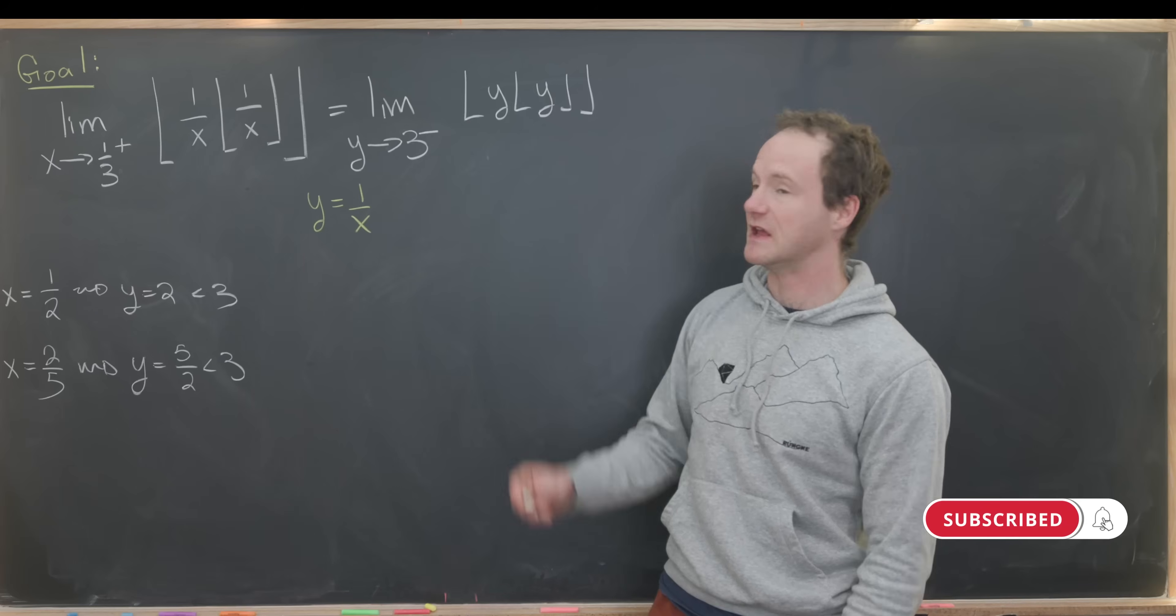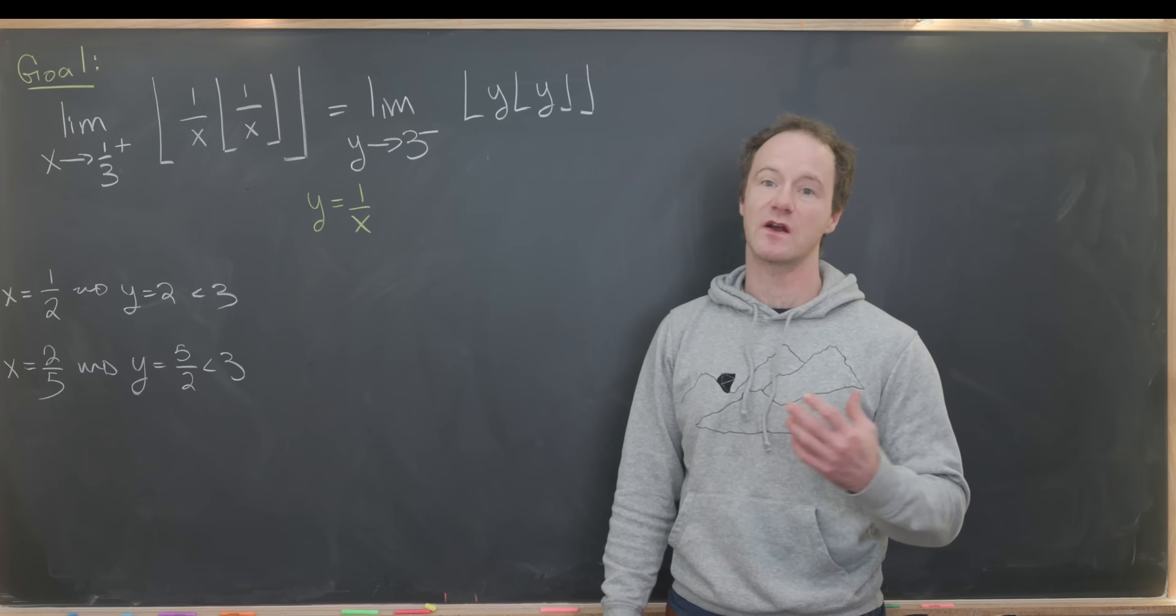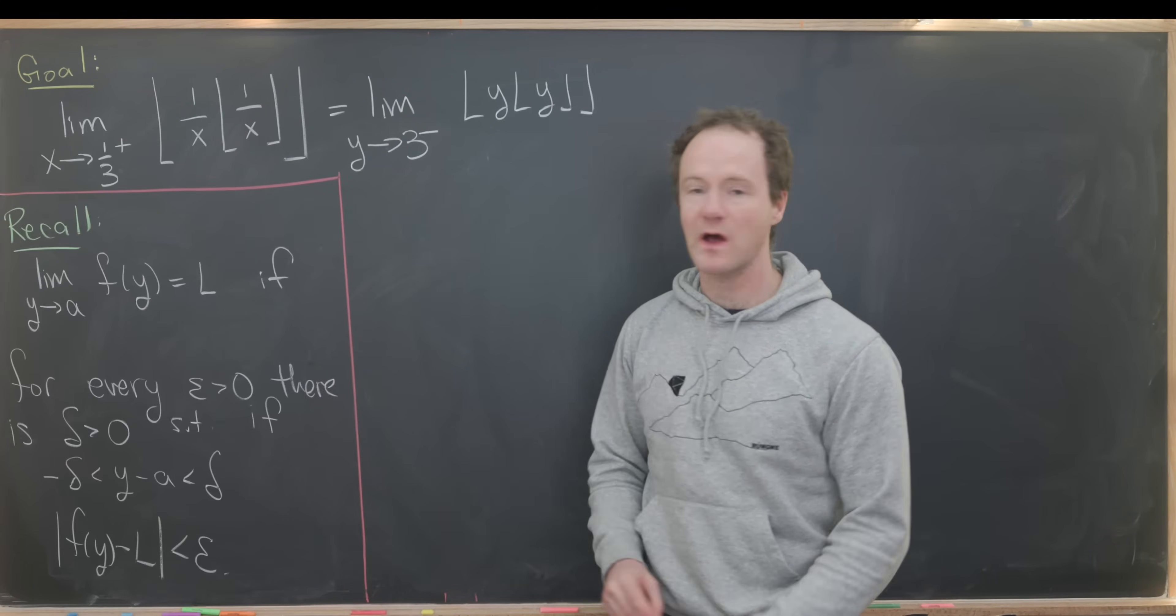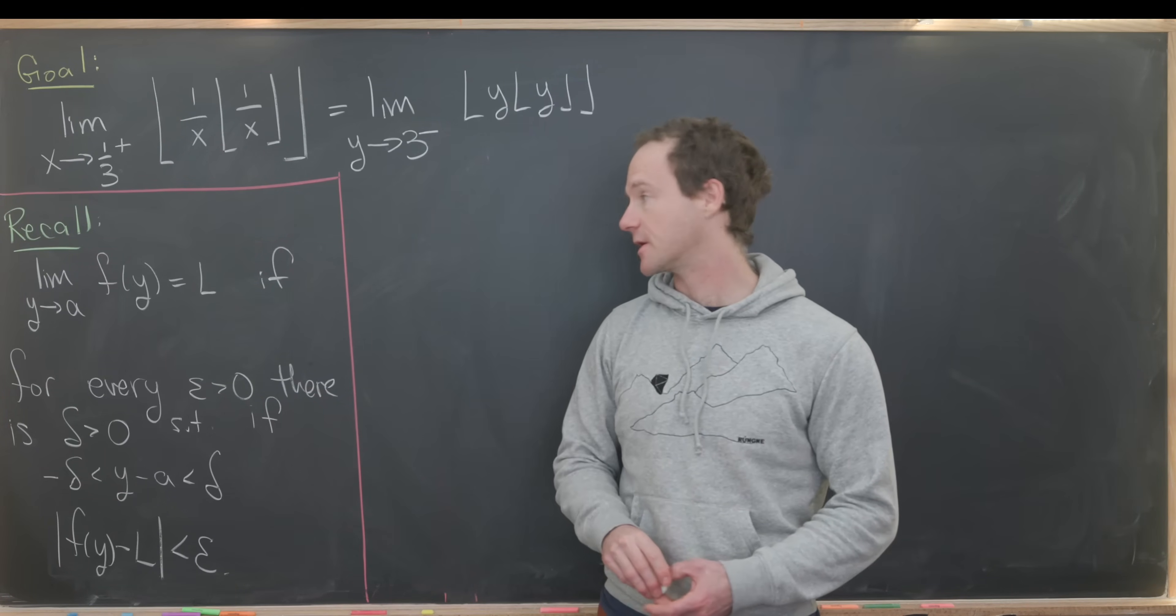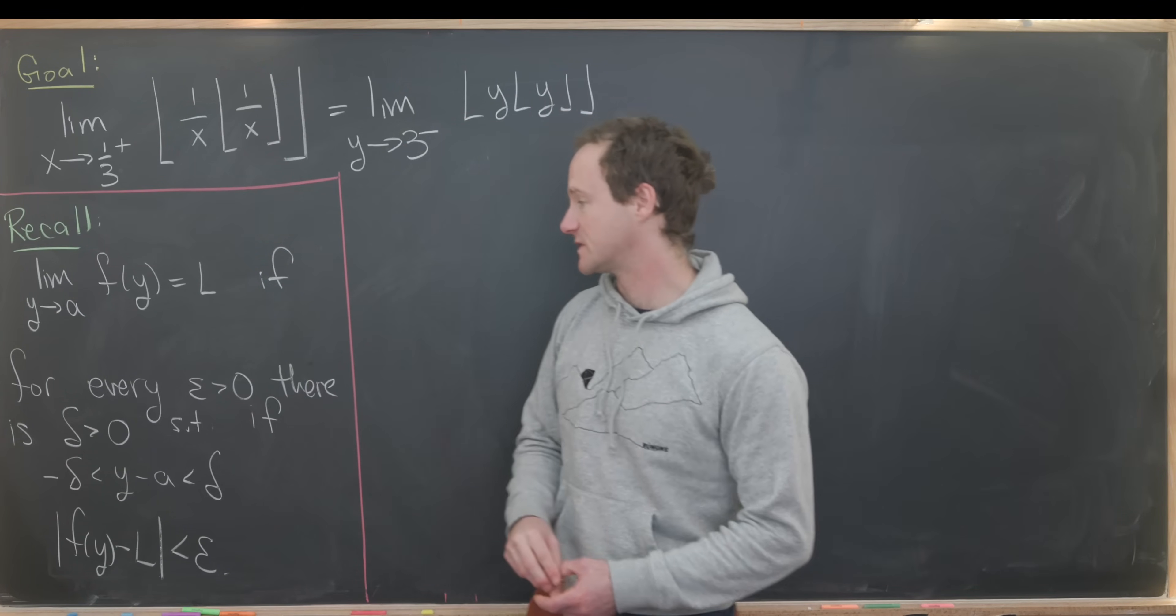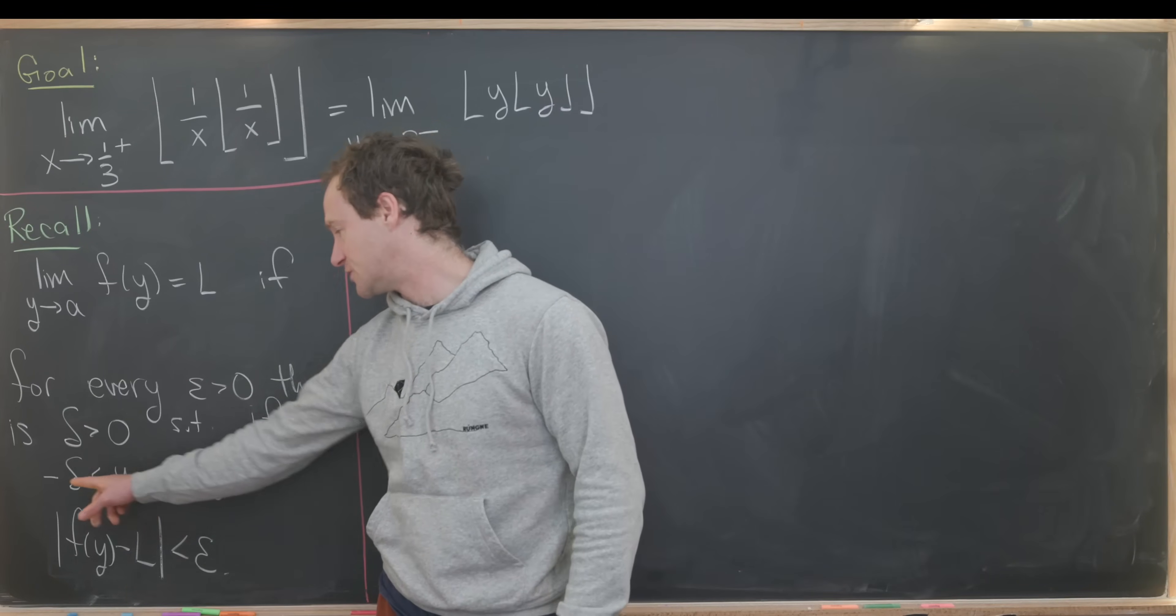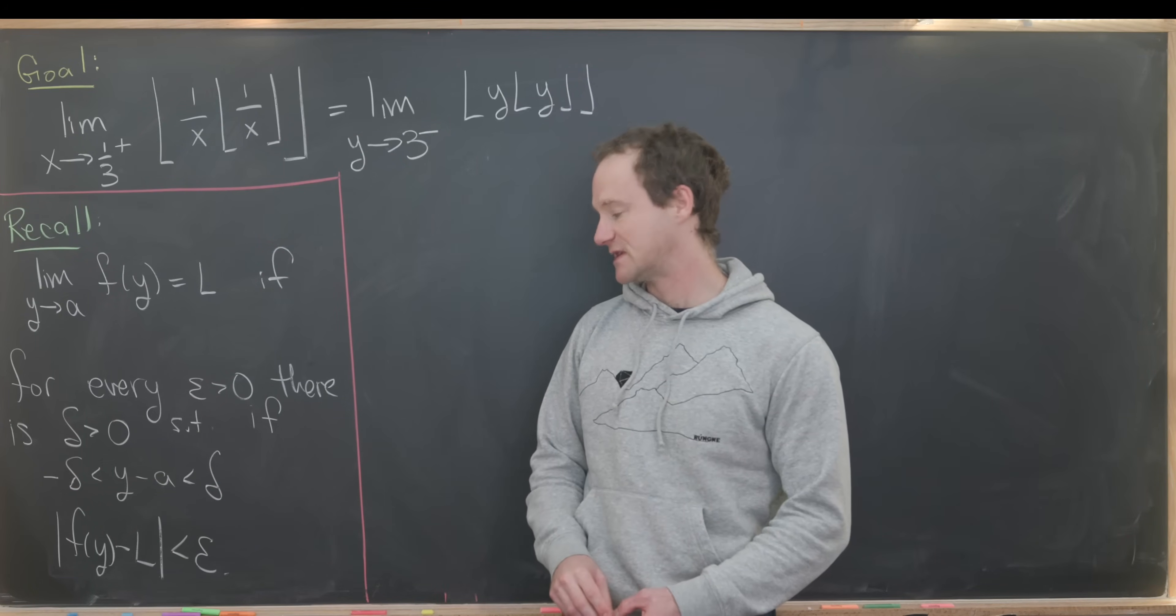We still have an iterated floor function, so there's still quite a bit to do here. This may be a class of limits where it's easiest to use the formal definition. Let's recall the formal definition of a limit. The limit as y goes to a of f(y) equals L if, for every epsilon bigger than zero, there is a delta bigger than zero, such that if y minus a is between negative delta and delta, then the absolute value of f(y) minus L is less than epsilon.